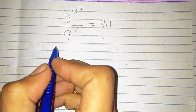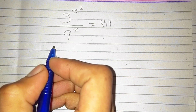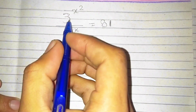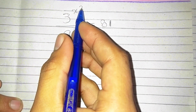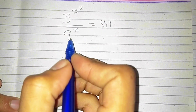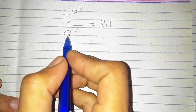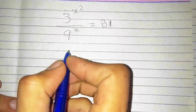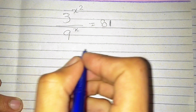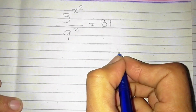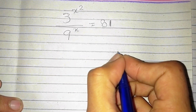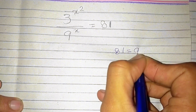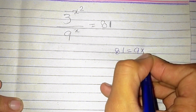Hello everyone. In this video we are going to solve this interesting math equation. We have 3 power x, whole power 2, divided by 9 power x, is equal to 81. We know that 81 is equal to 9 times 9.